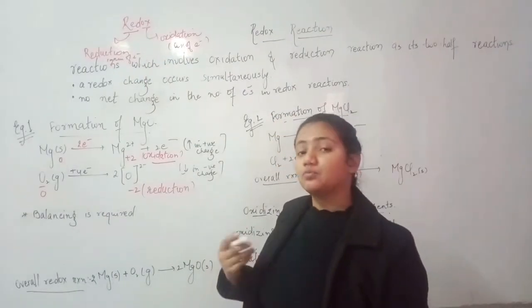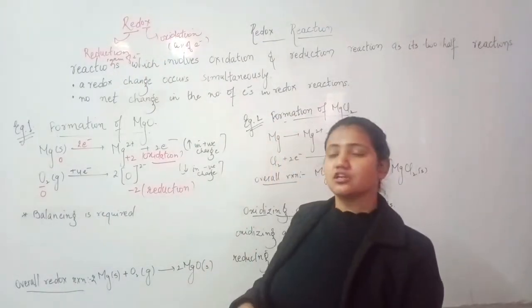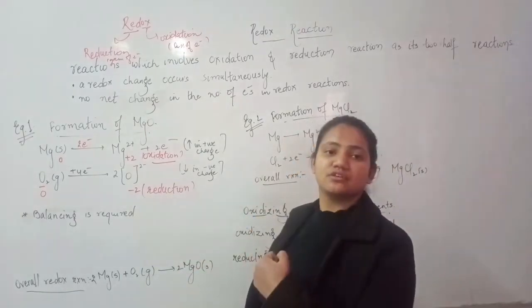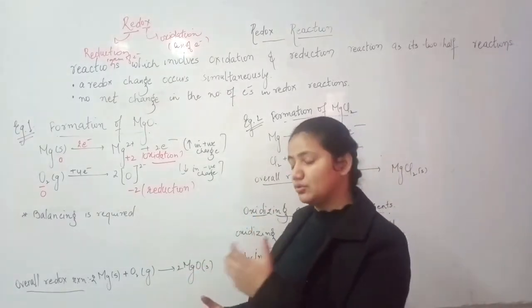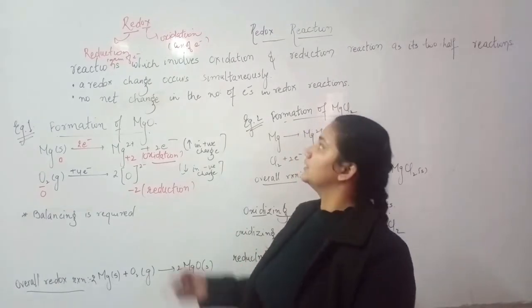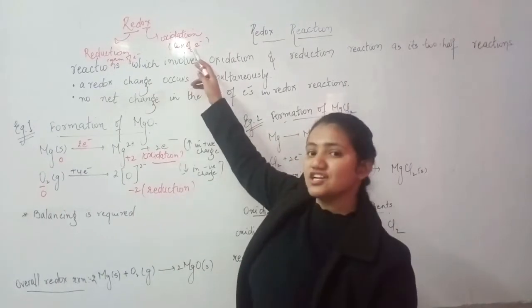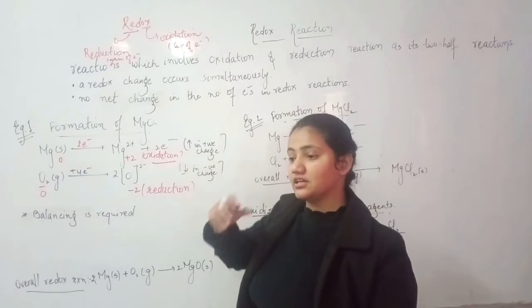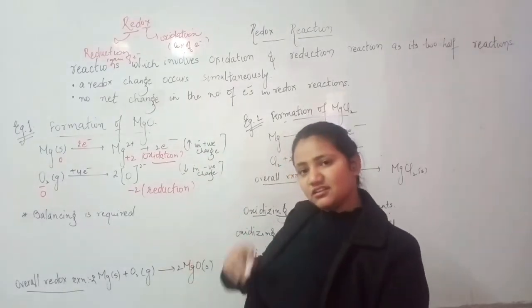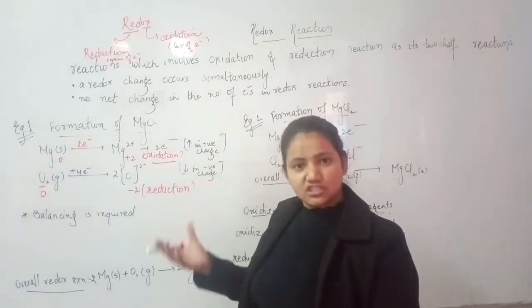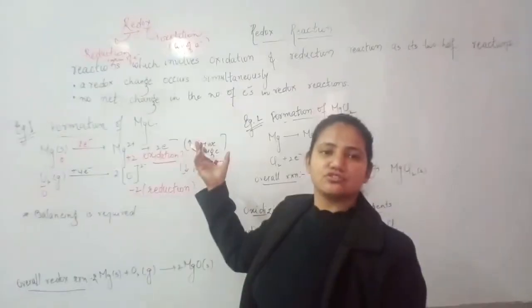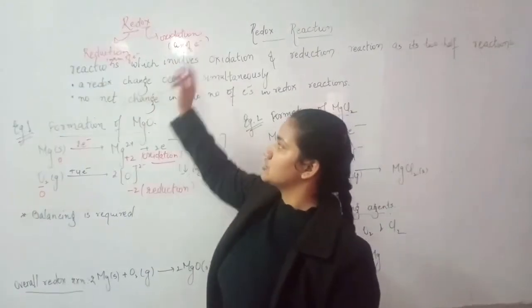Talking about what is reduction and what is oxidation: reduction is basically the gain of electrons. When the oxidation state decreases, that is called reduction. But in case of oxidation, it favors the oxidation process, that is the increase in the number of oxygen atoms or the loss of electrons. That is called oxidation.